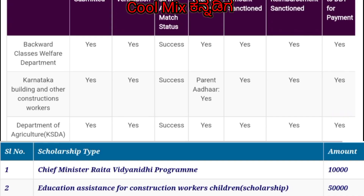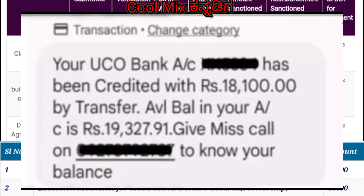I know that I have a backward class amount, agricultural amount, labor card and welfare department. My friends have a credit amount, but I don't have credit for my account.